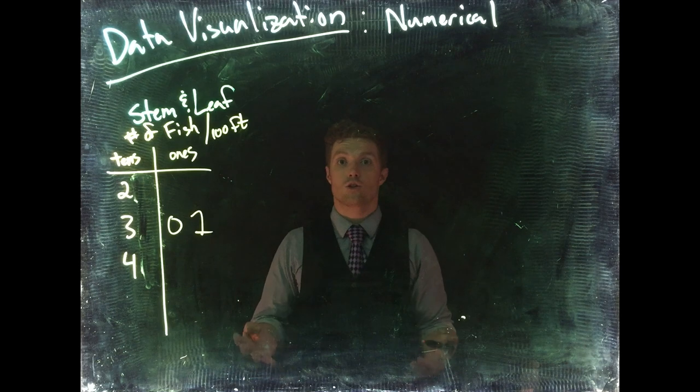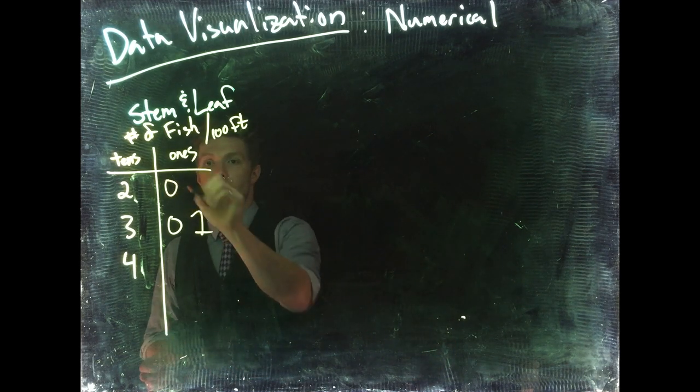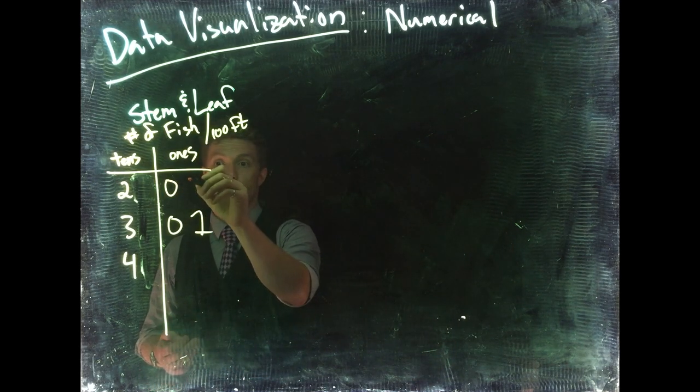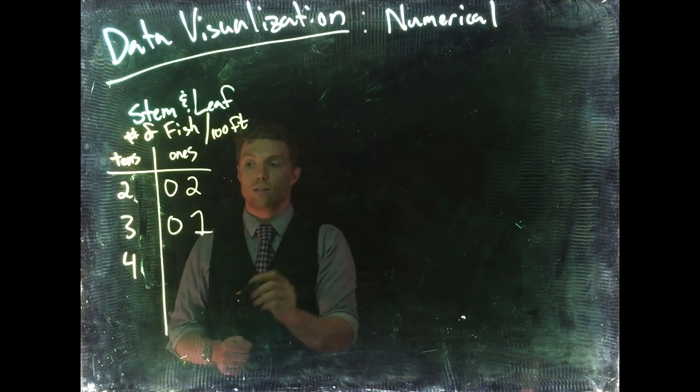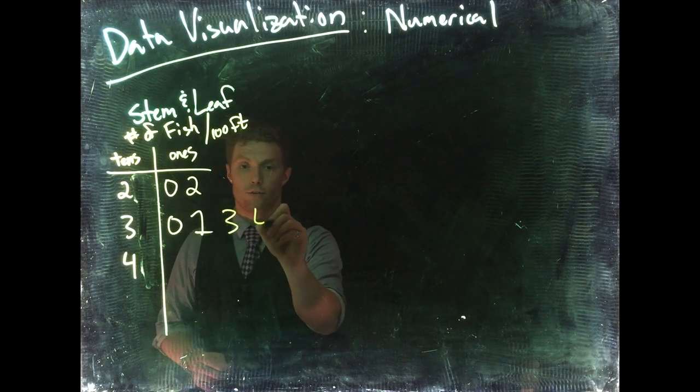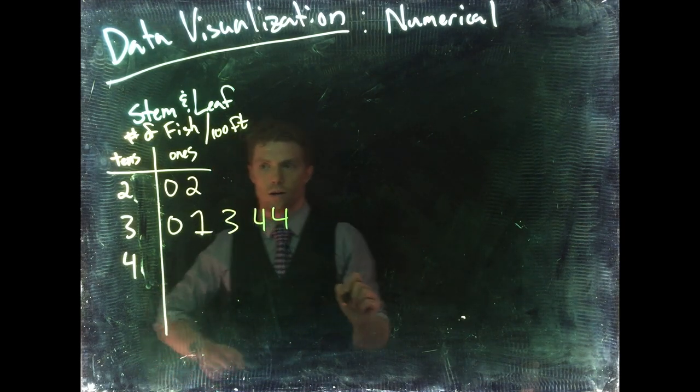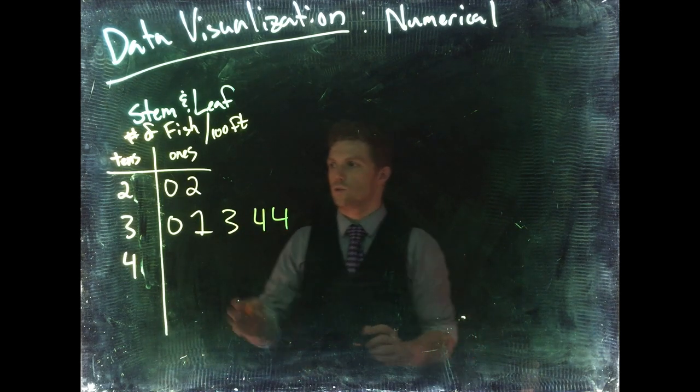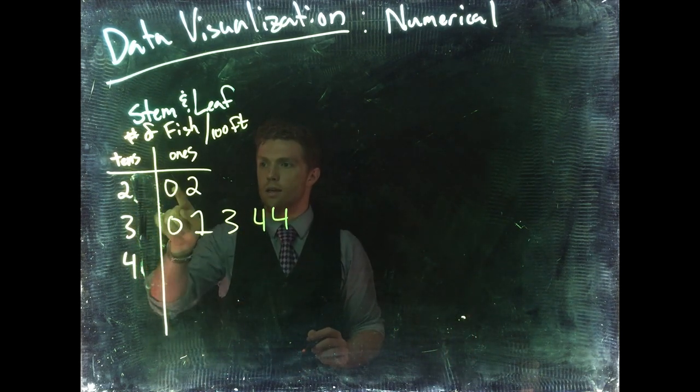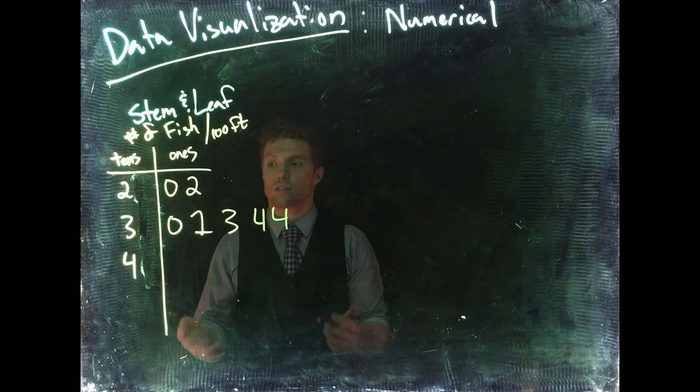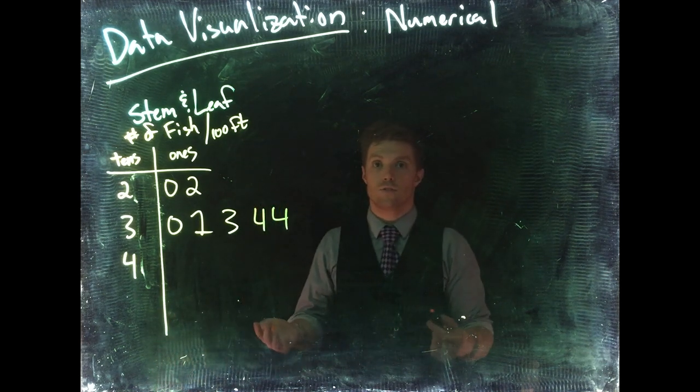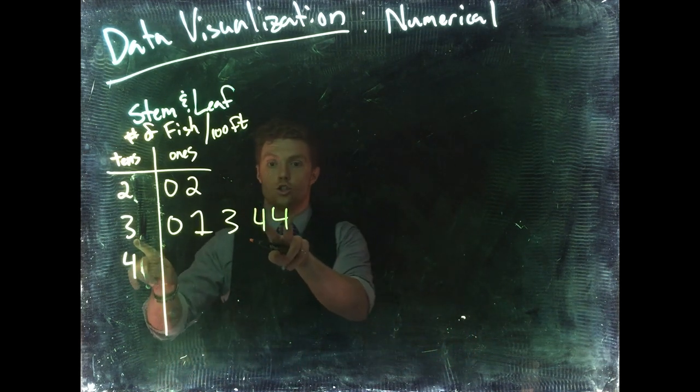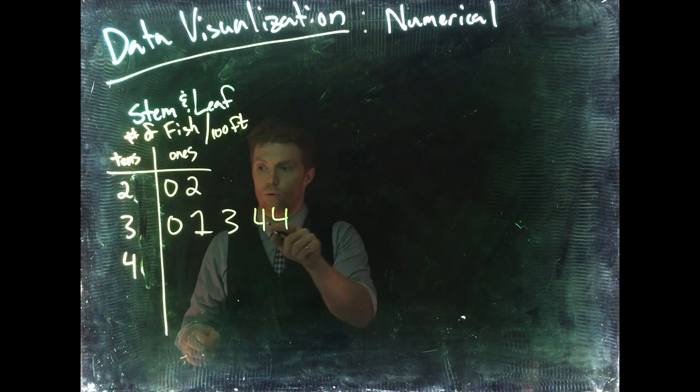We go out and we saw 20. The second time we saw 22, 32, then we saw 33, 34, another 34, and we keep on adding. So this is our tens place, our ones, and we could then ask questions about how many times did we see 34? Well, we saw that two times.